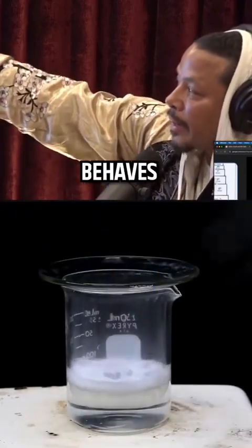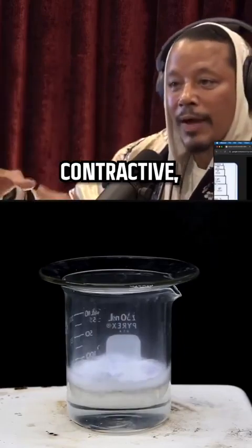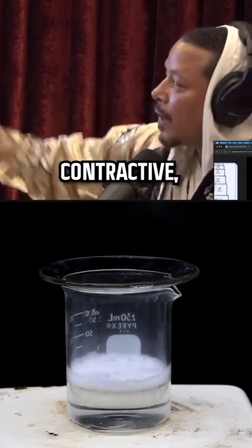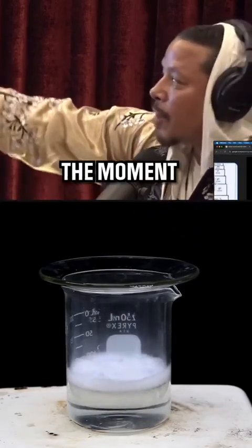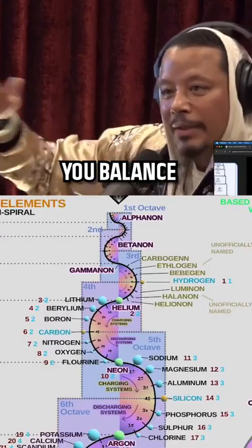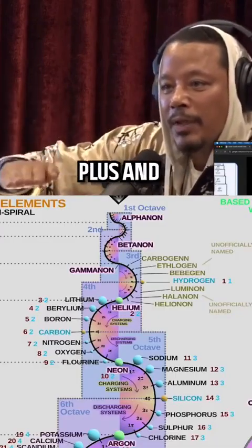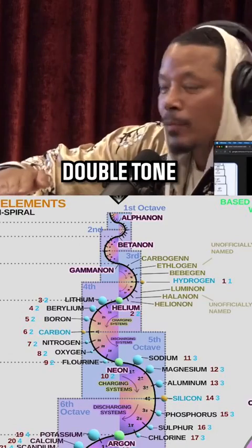It has a negative side and a positive side. Lithium is contractive. Beryllium is contractive. Boron is contractive. But the moment you get to carbon, you balance it out. Gets to a perfect balance of plus and minus four. So it's a double tone.